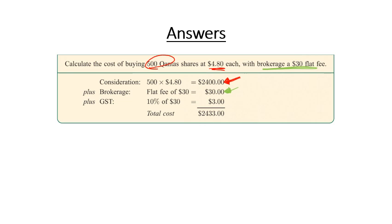But then we have to work out 10% of that $30. So remember, 10% is 0.1. We times that by 30. That's going to give us $3.